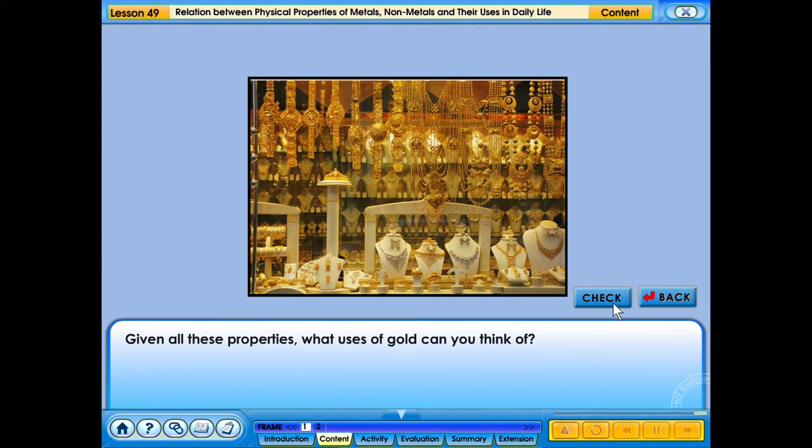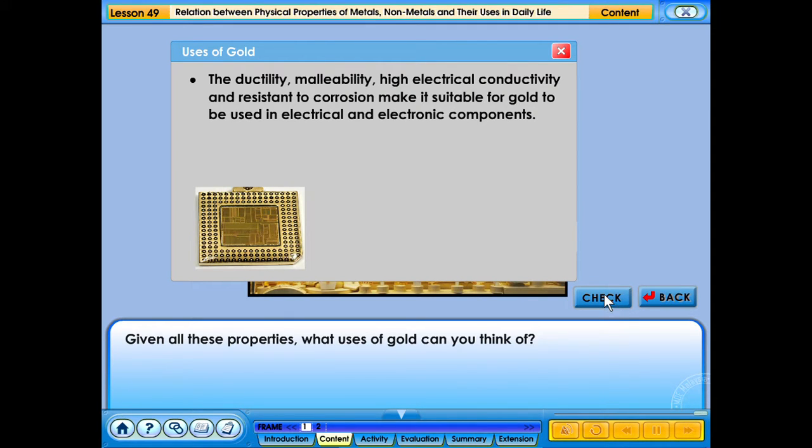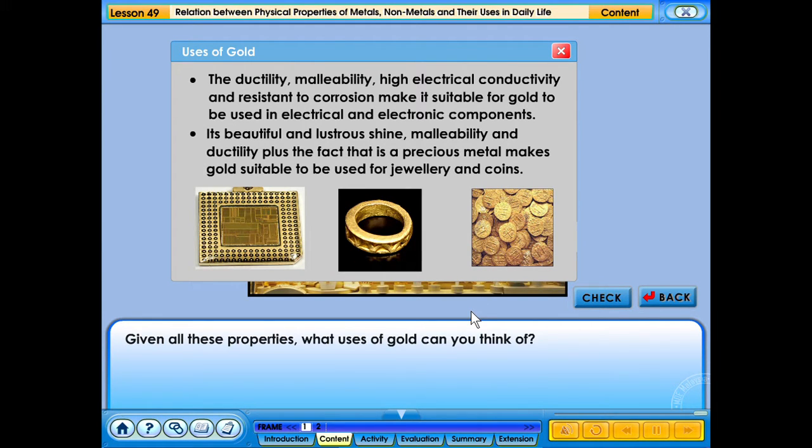The ductility, malleability, high electrical conductivity and resistance to corrosion make it suitable for gold to be used in electrical and electronic components. Its beautiful and lustrous shine, malleability and ductility plus the fact that it is a precious metal makes gold suitable to be used for jewelry and coins.